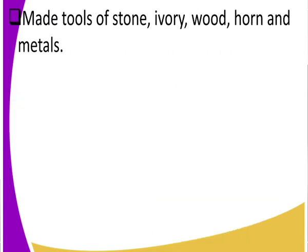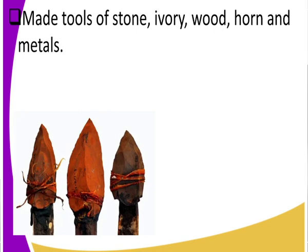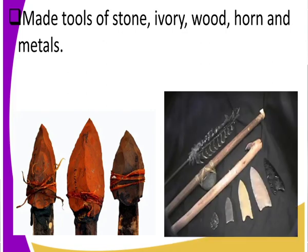He made tools of stone, ivory, wood, horn, and metals. When he used metals he could make arrowheads and spears. Look at the stone tools — those stone tools could be tied to a piece of wood and used for hunting. Looking at the metal tools, I can see an arrow, a spear, and a panga with two cutting edges. These tools were made out of stone, ivory, wood, horn, or metals.